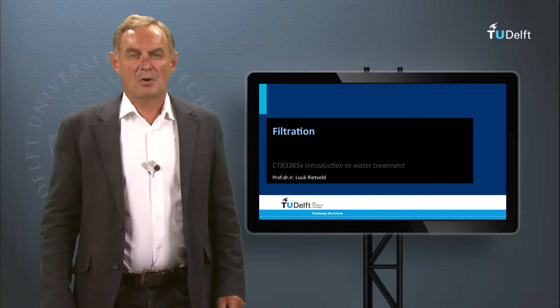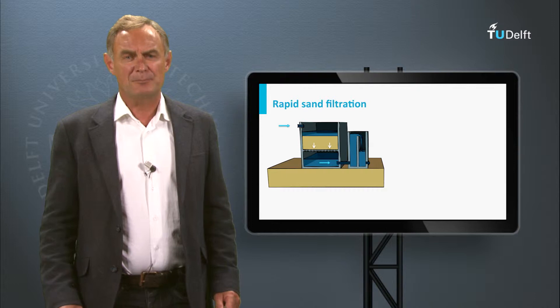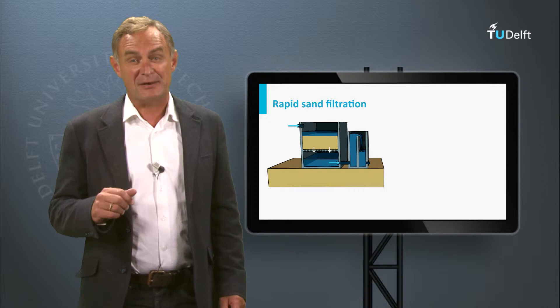Welcome to this lecture about filtration. Rapid sand filtration is the most important treatment process in a drinking water treatment plant. It has different functions, such as the removal of suspended solids, iron, manganese, and ammonia.